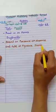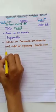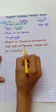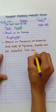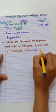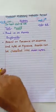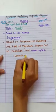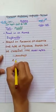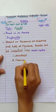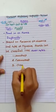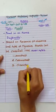Plastids can be classified into three types: the first one is leukoplast, the second one is chromoplast, and the third one is chloroplast.